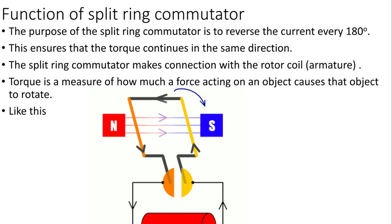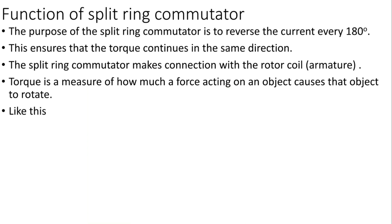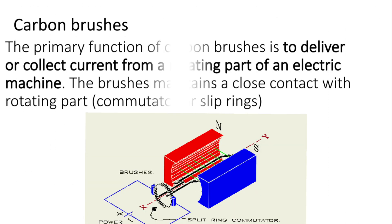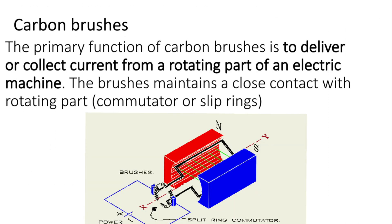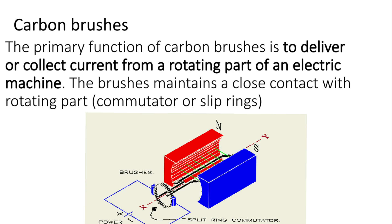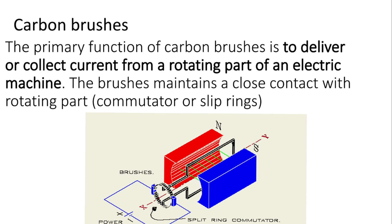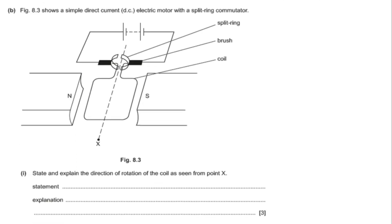The primary function of carbon brushes is to deliver or collect current from a rotating part of an electric machine. The brushes maintain close contact with the rotating part — the commutator or slip ring. The commutator is used in the DC motor and the slip ring is used in the AC generator.